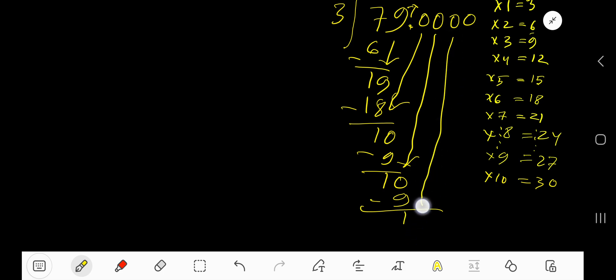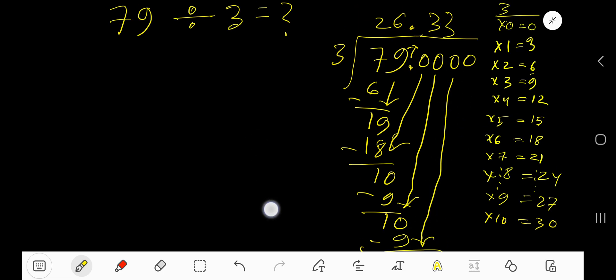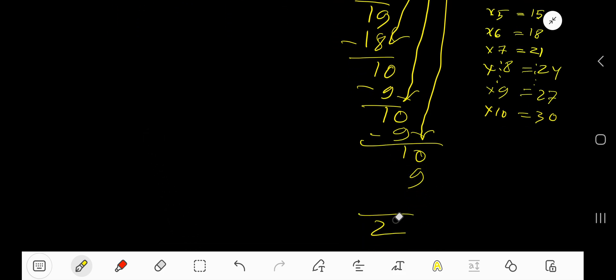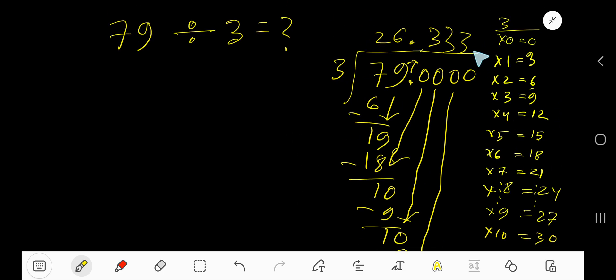1. You can bring down more zeros, but since we have gotten 3 places after the decimal, that is 3 digits after the decimal, we can stop. So this is the result. You can place a bar over 3 to mean that this 3 is repeating. So 26.3 with a bar is your answer.